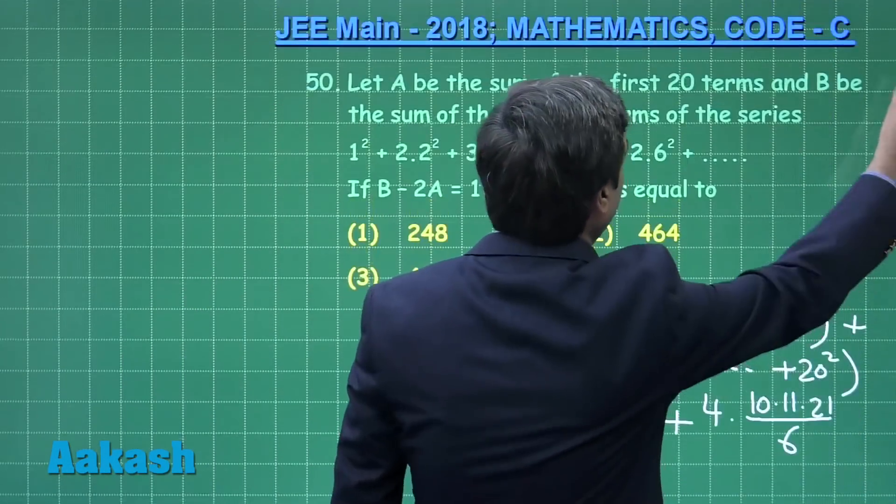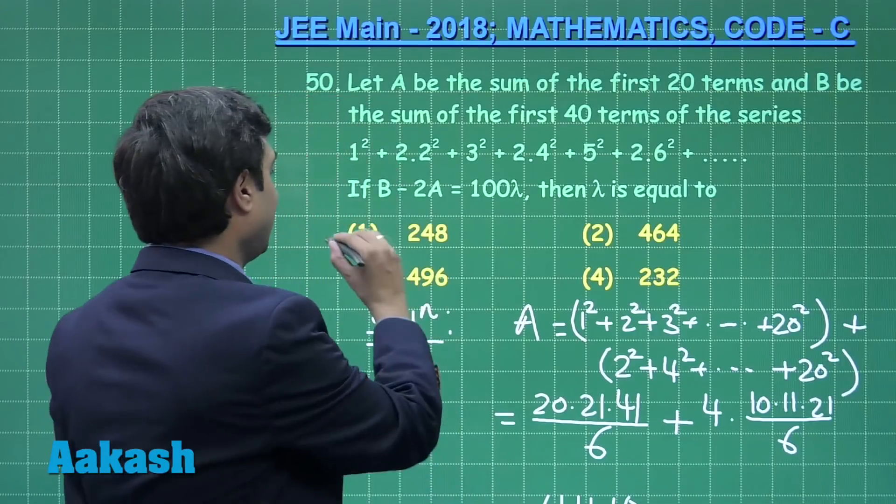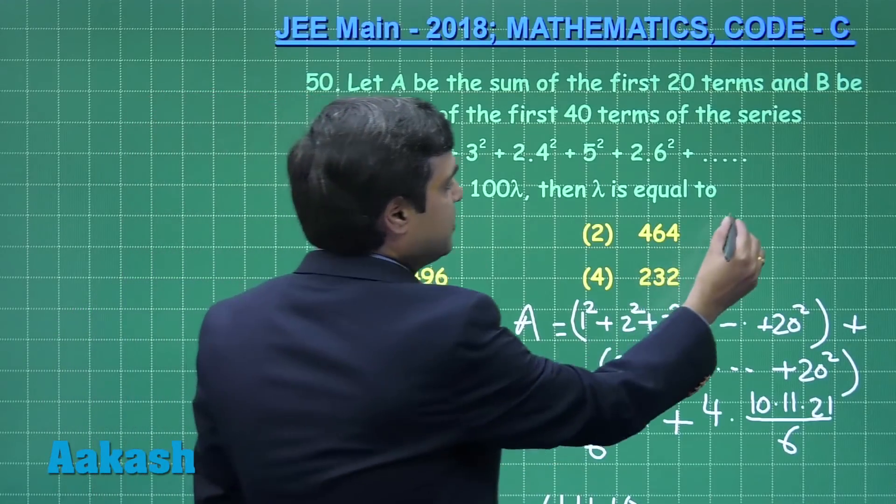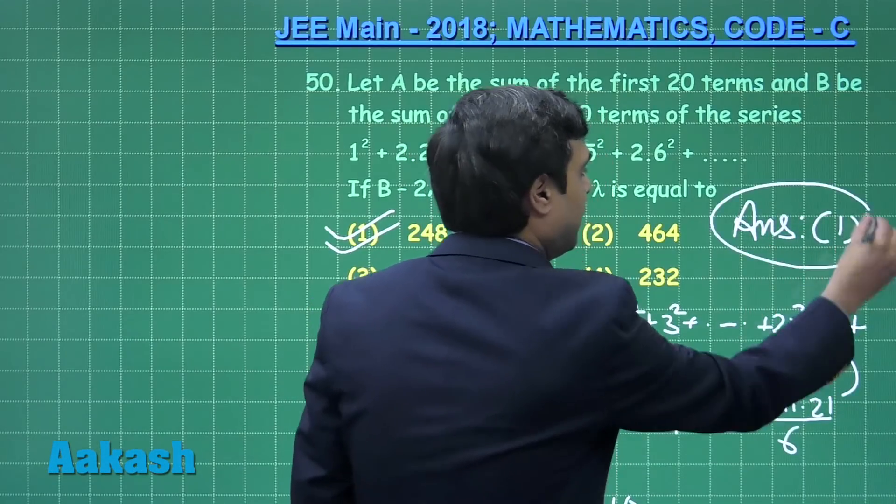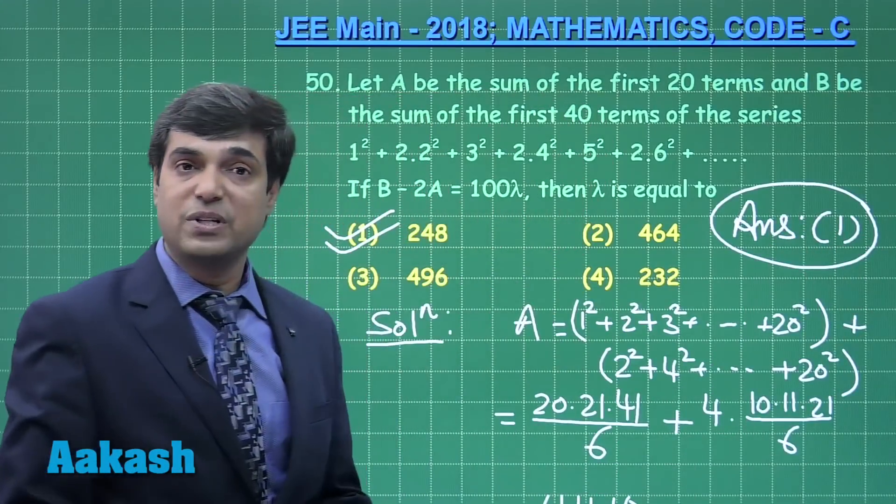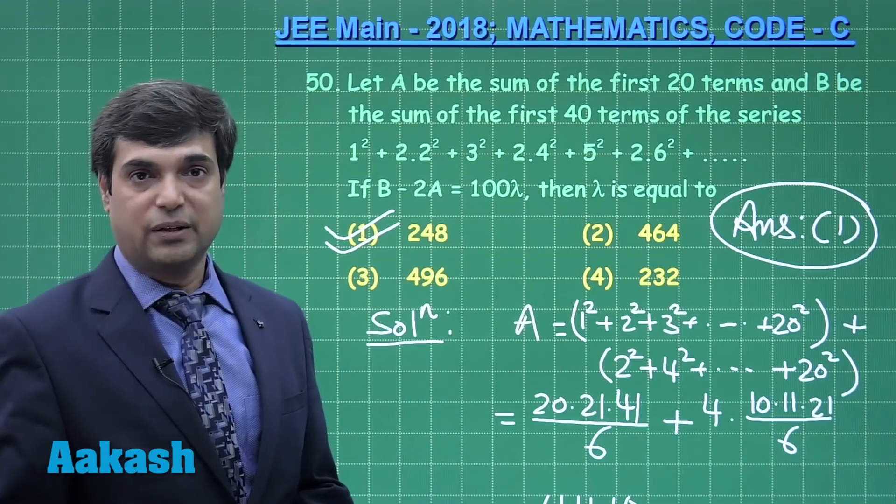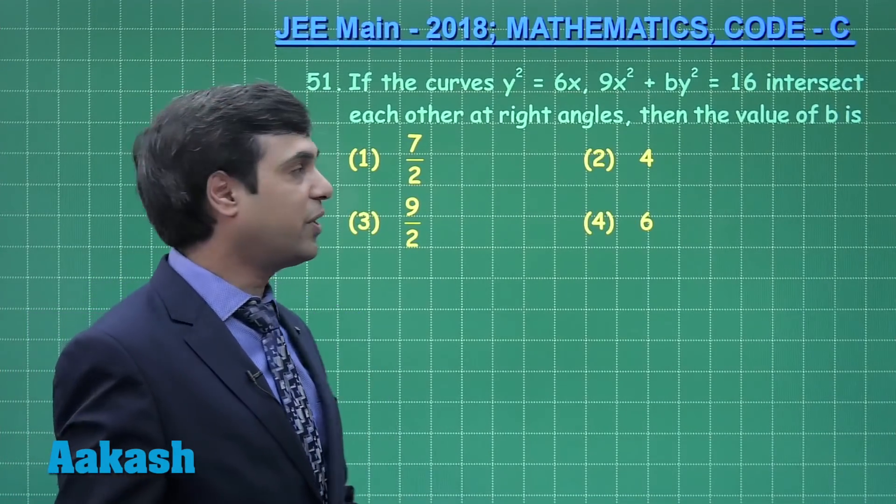From the given options we can see here 248, that is option number 1 is correct. Mentioning the correct answer as option number 1. This is clear from sequence series; move to the next question.